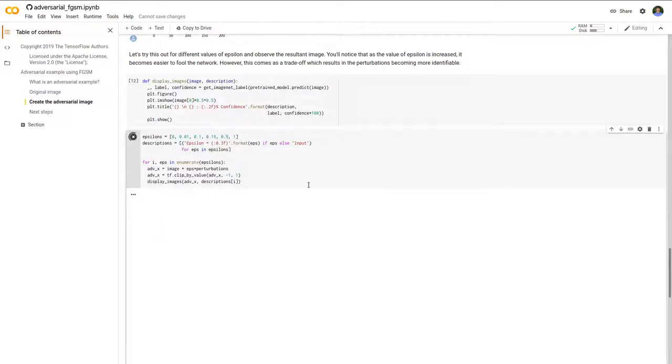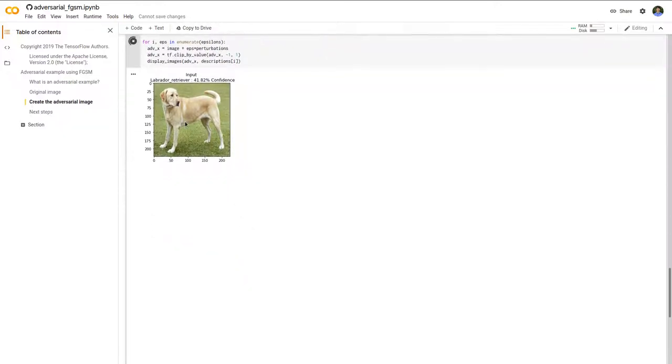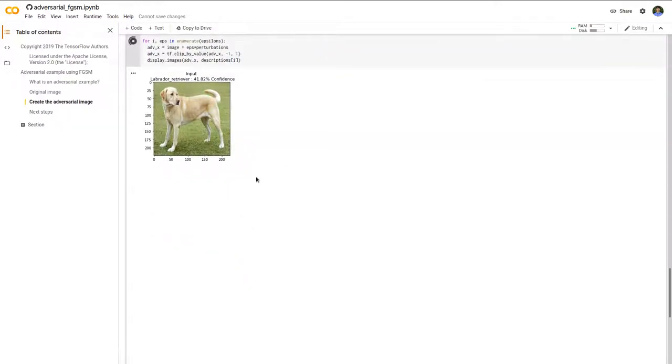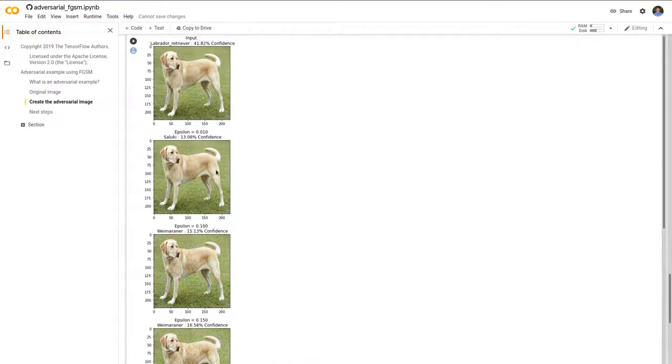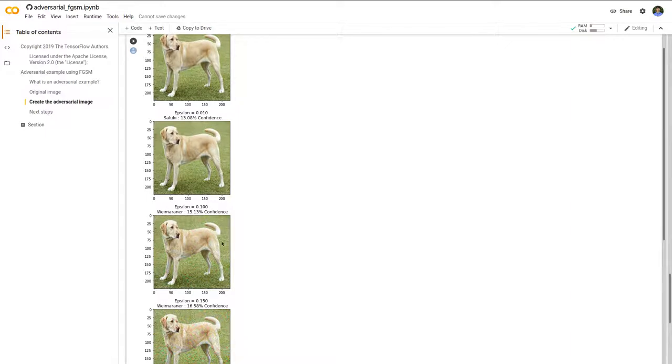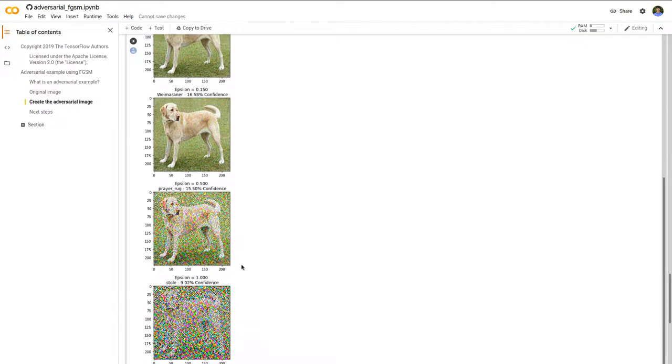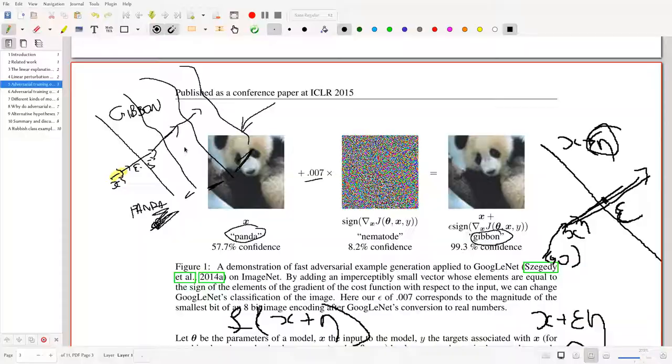If we add larger perturbations, what to expect is that the image gets more and more distorted. Let's look at the distortion: this is pretty much invisible distortion, here you can kind of see it, and here you can definitely see it.